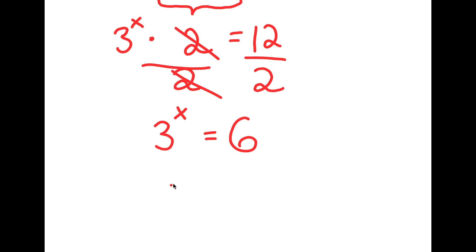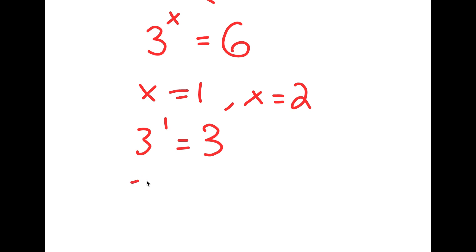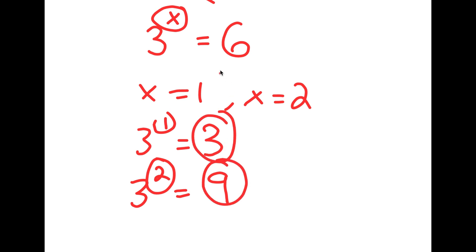Now, if we plug in x equals 1, we get 3 to the power of 1, which is equal to 3. And if we plug in x equals 2, we get 3 to the power of 2, which is equal to 9. So we know that the value of x has to be somewhere in between 1 and 2, because 6 is between 3 and 9, meaning that x is going to be a decimal value.